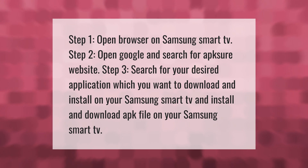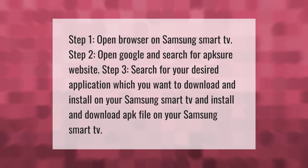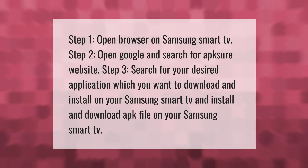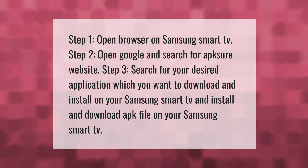Step one: open the browser on Samsung Smart TV. Step two: open Google and search for the APKPure website. Step three: search for your desired application, download and install the APK file on your Samsung Smart TV. Thank you for watching — please subscribe and hit the bell notification.